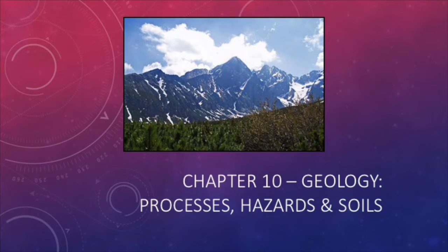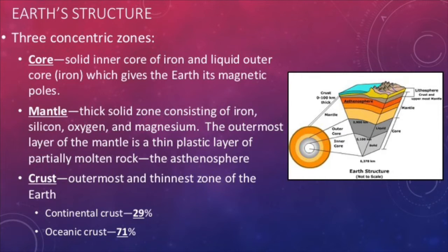Chapter 10 is essentially a crash course on earth science. Before we get into the earth's resources, we have to know where they actually come from. We will start with the earth's interior. The earth's interior is comprised of three concentric zones: the core, mantle, and crust.